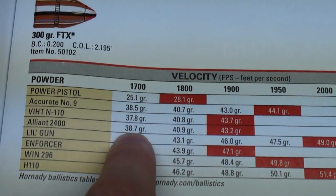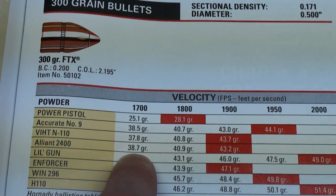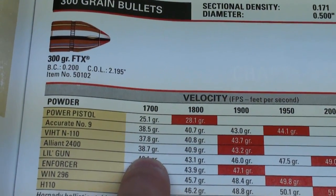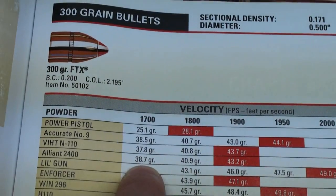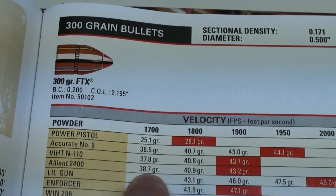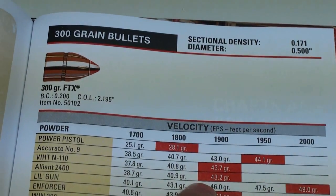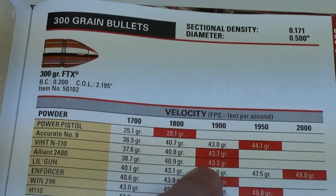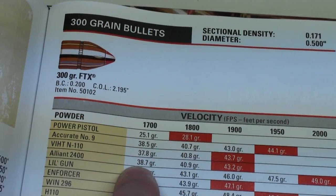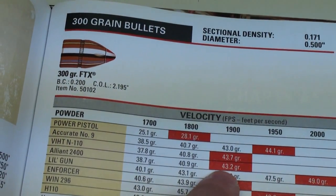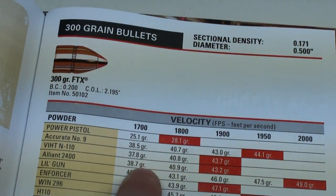The starting grain for Alliant 2400 is anywhere—and once you start, you should always start at the recommended starting load and work up, adding more grains. But you can see here, the starting range of 38 to 43 grains, there's really not that much of a difference.